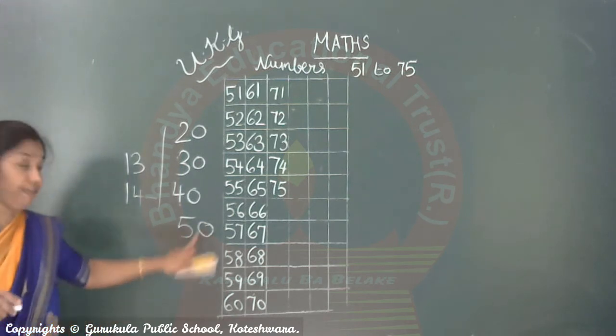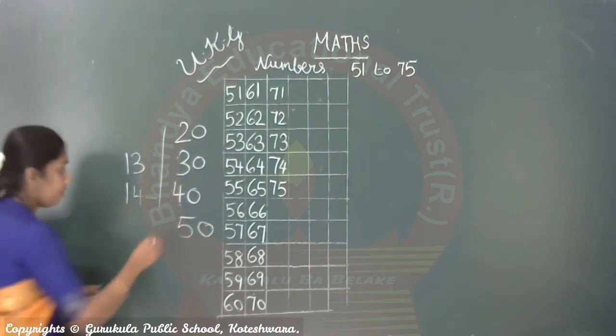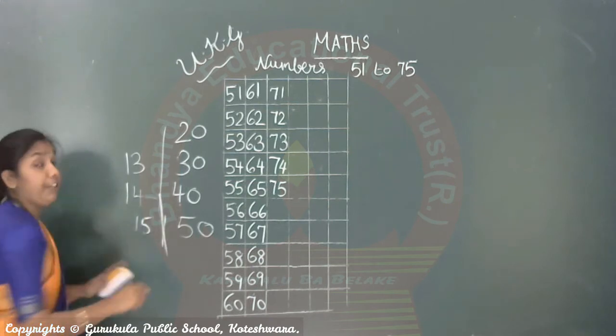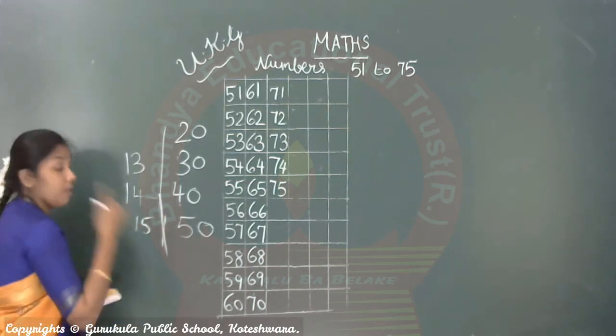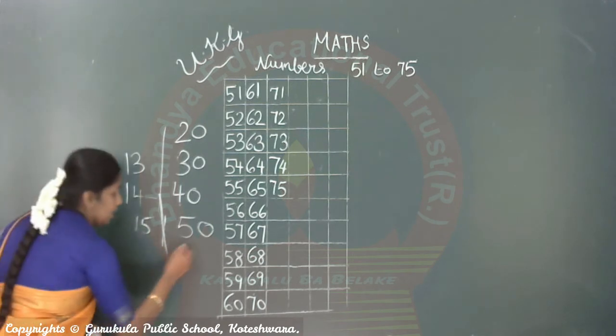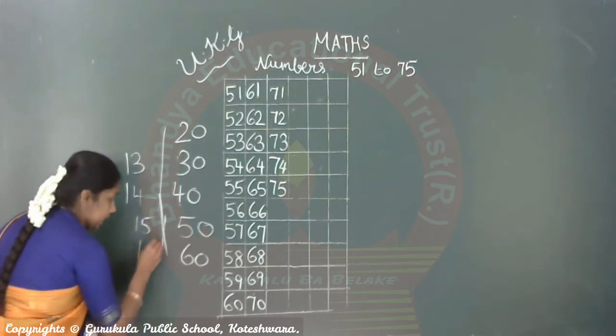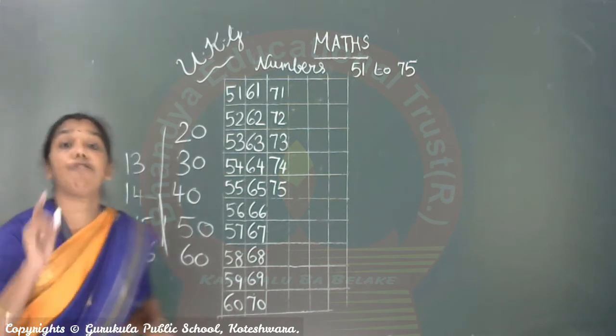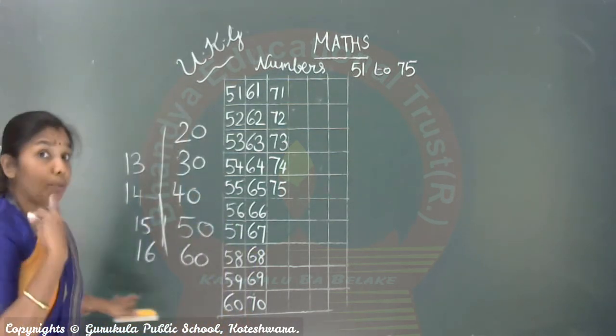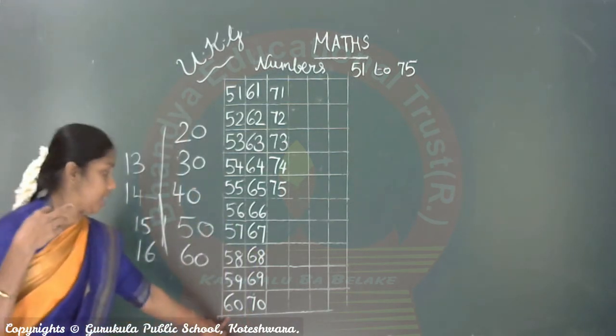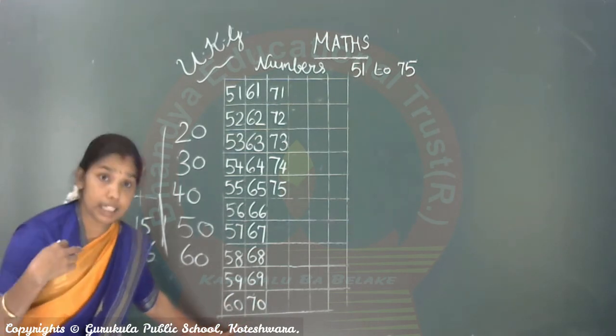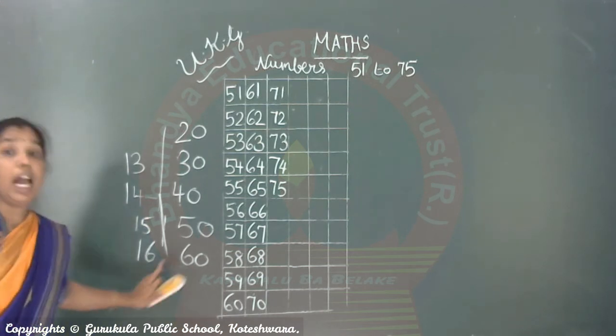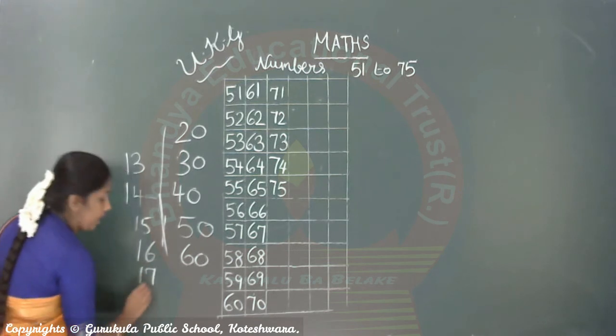This is 30. Then 4, 0 is 40, right? Whereas 1, 4 is 14. 1, 4 is 14 and 4, 0 is 40. Then 5, 0 is 50. 1, 5 is 15. 1, 5 is 15. Sure, by pronouncing here to be careful on this. 6, 0 is 60. 60, 60 comes after 59. After which number is 60? So this is 60, whereas this 1, 6 is 16.